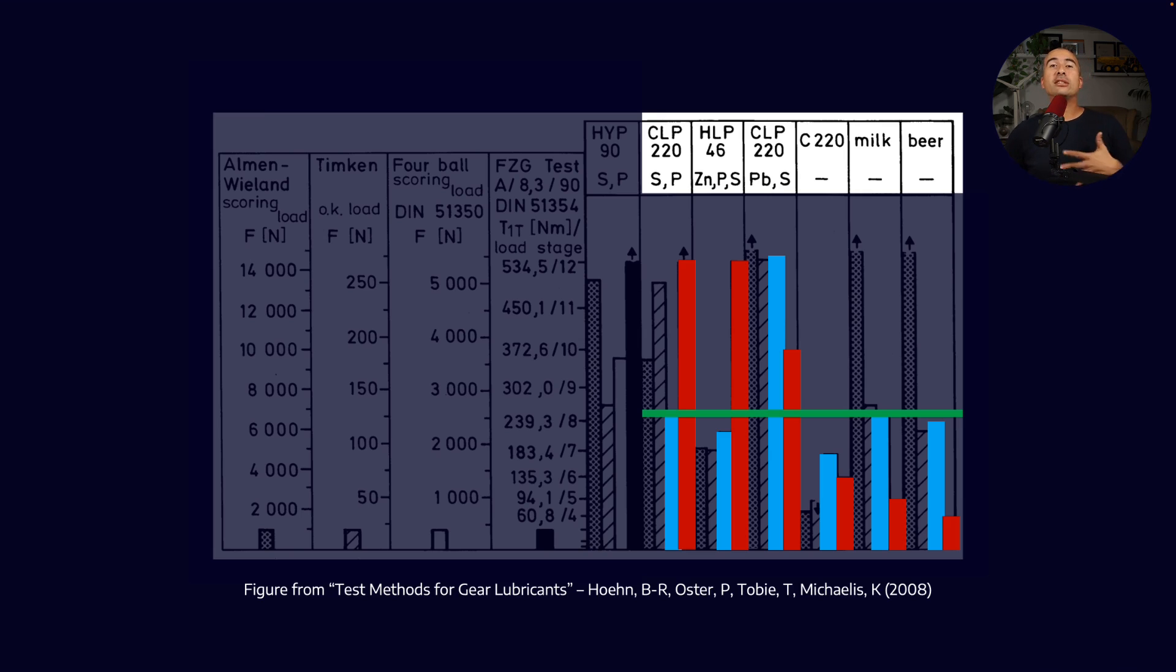Whereas for the FZG test, the spread is much more as you would expect from real world performance. The kicker here is that if you actually look across and read across the performance of milk, milk performed better than the HLP 46 hydraulic oil, as well as the 220 base oil, it performed as well as the CLP 220.